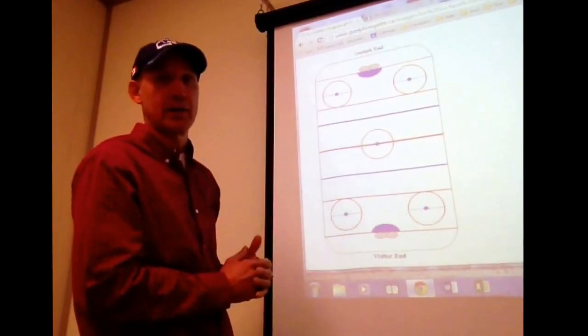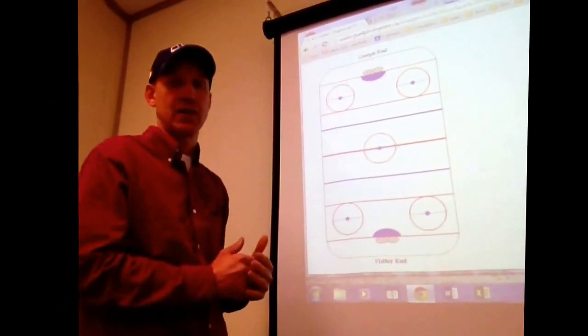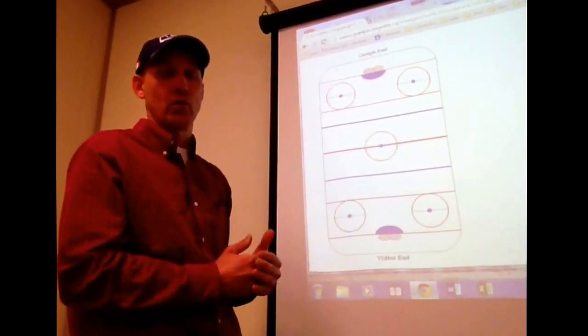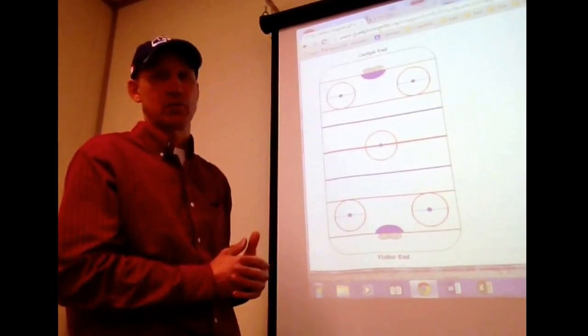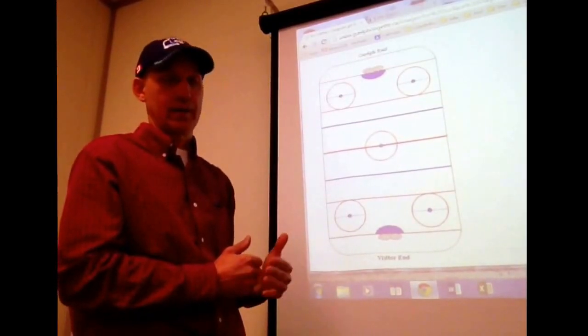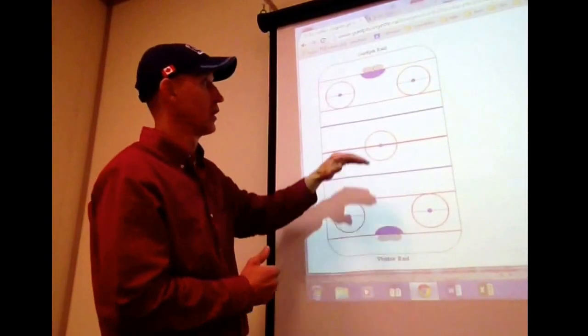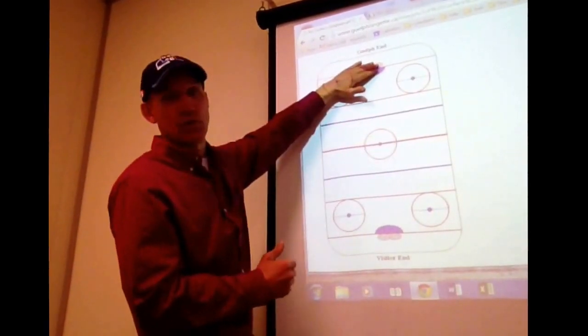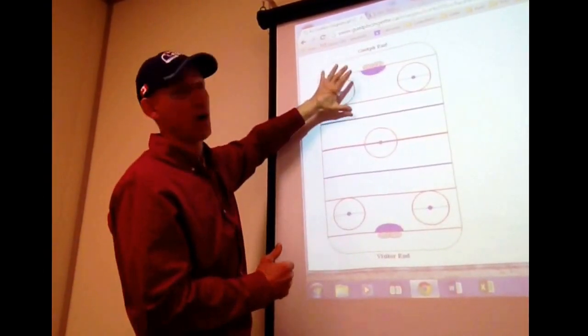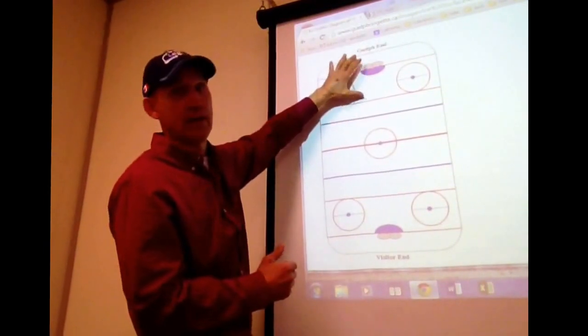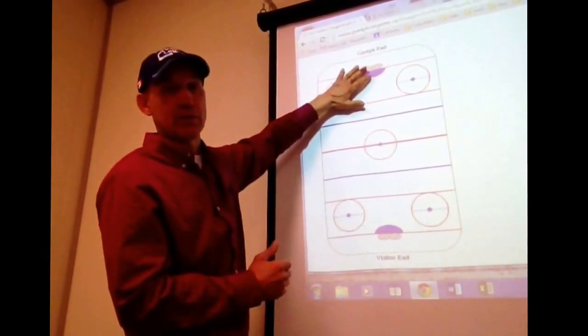So just for ease of the discussion at practices, we're going to always be referring to the offensive zone and defensive zone in reference to our net. So if this is our net and we're talking about the defensive zone, we'll always be talking about the area from the blue line in. That would be our defensive zone.